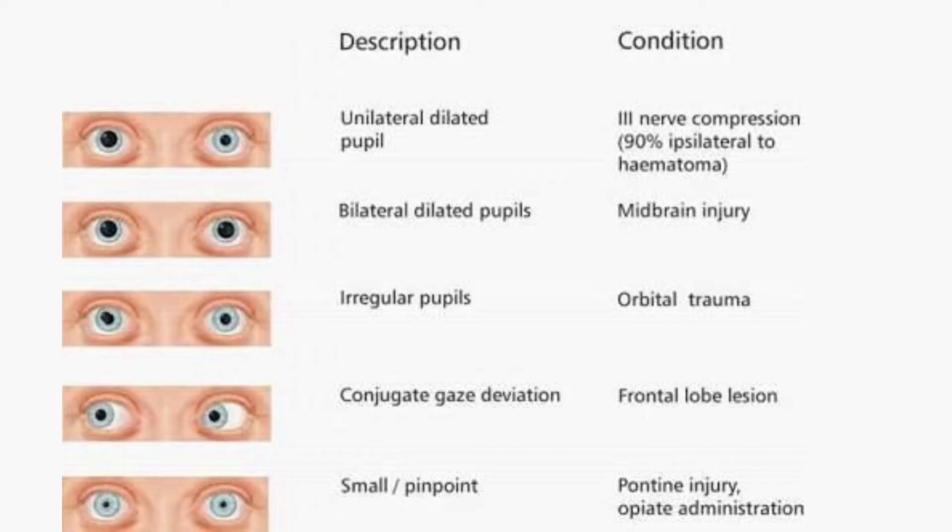In cases of unilateral dilated pupils, there will be third cranial nerve compression. If we found bilateral dilated pupils, it will be most likely a midbrain lesion.